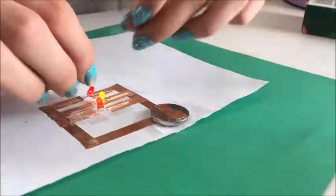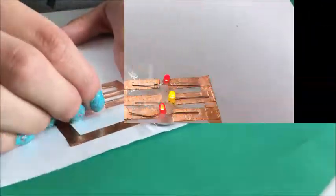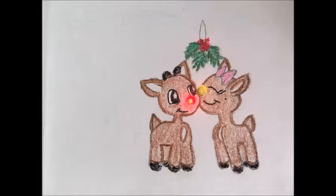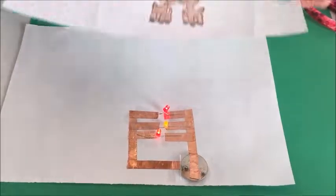Remember, positive needs to be with positive. If not, your circuit will not work. At the end, you should have your circuit look a little like this. You can place your paper over it so that you can see where your lights will light up.